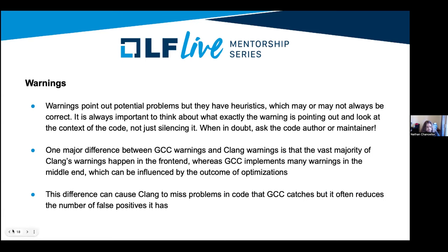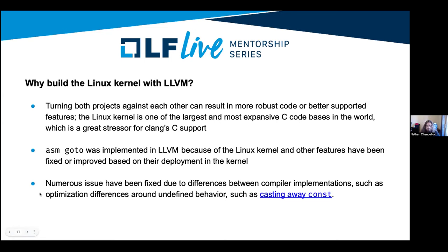An audience member summarizes: building with both GCC and Clang gives better coverage for finding security issues, uninitialized variables, and similar problems. The speaker agrees. There are very few cases where a fix for a Clang warning breaks something under GCC — the goal is that both compilers warn about the same code, meaning they both agree there's a potential problem. We want to avoid breaking GCC in pursuit of supporting Clang, and any fixes done should not break use of the other toolchain.